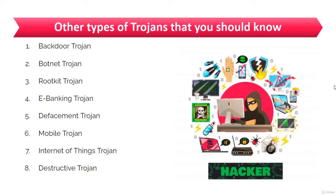The next type is the rootkit Trojan. Rootkits cannot be detected by observing services, system task lists, or registries. Rootkits consist of three components: a dropper, a loader, and the rootkit itself. Examples of rootkits include Whistler, CPD, Grayfish, and Wingbird.